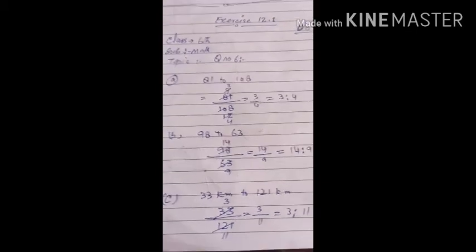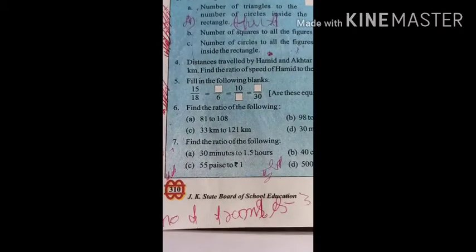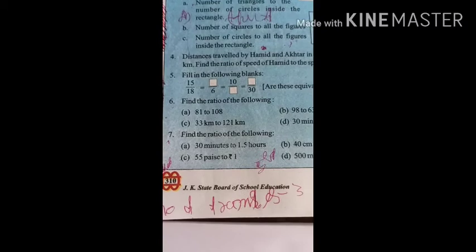We are going to solve question number 6. That is, find the ratio of the following: 81 to 108.